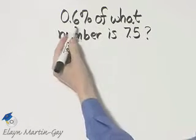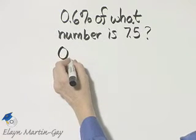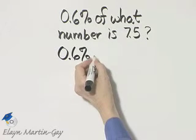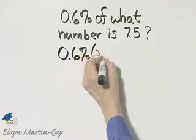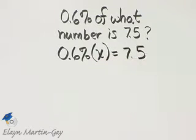Let's do a direct translation here. Six-tenths percent, so that is six-tenths percent of what number? That would be times x. Is means equals seven and five-tenths. And there is my equation.